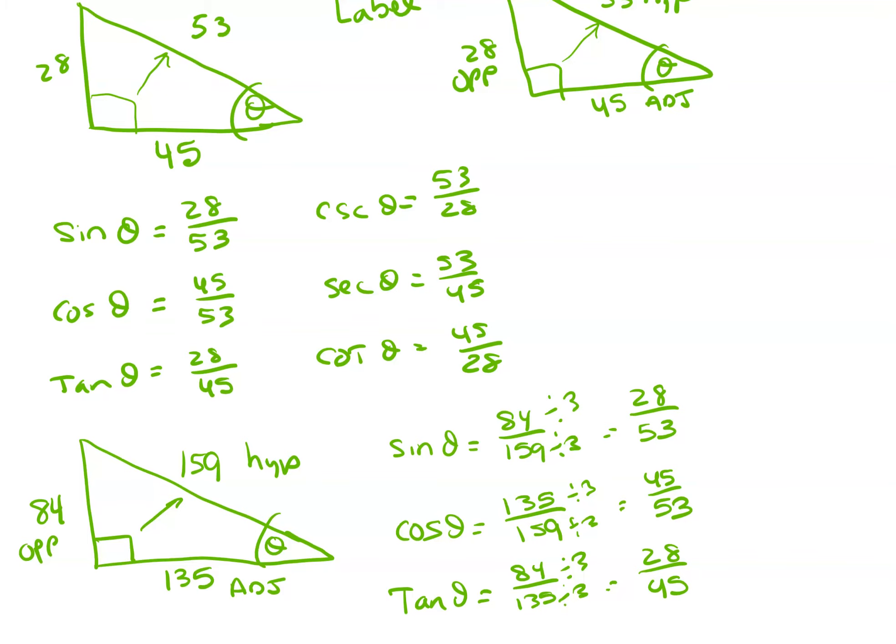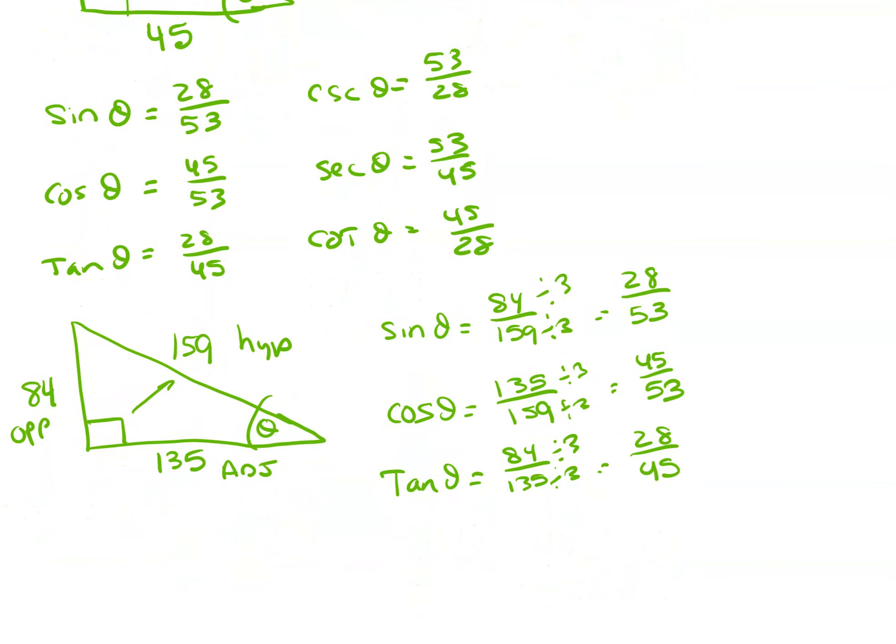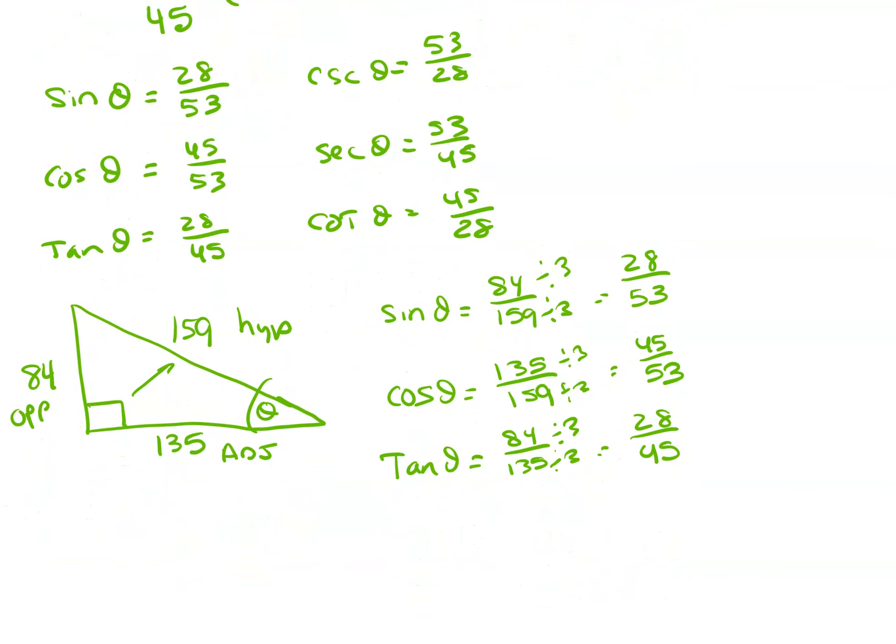So if I expand this a little further, and let's say I am looking at these numbers now with this theta over here. So label my sides. Opposite is going to be 84. Hypotenuse, again, always across from the angle, 159. Adjacent, 135.